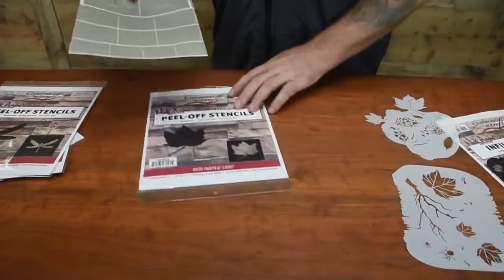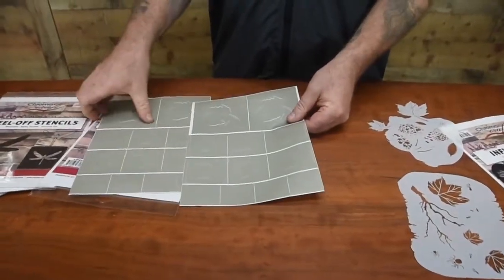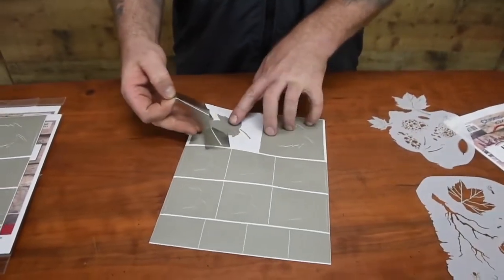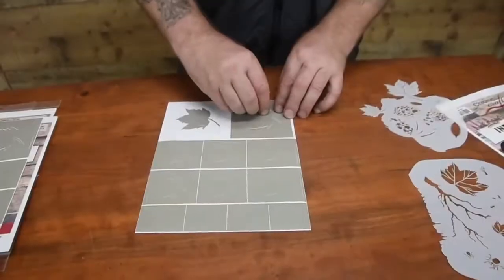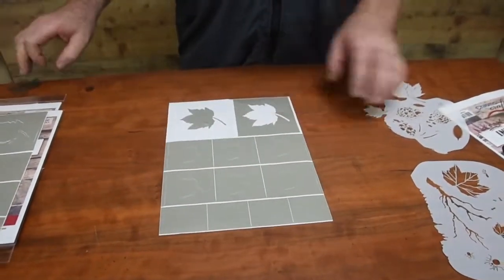In the peel-off stencils pack you will find two sheets of precision cut shapes. Peel away the shape you wish to use. A positive or negative shape is then available for sticking to your chosen surface.